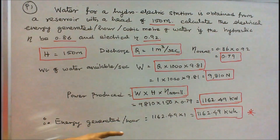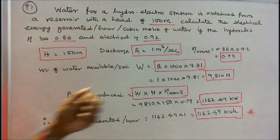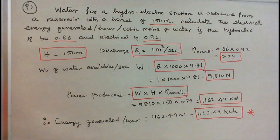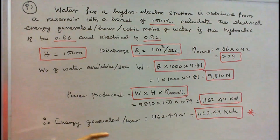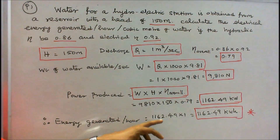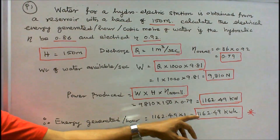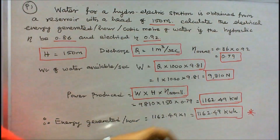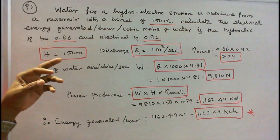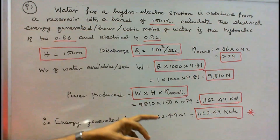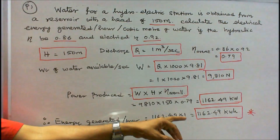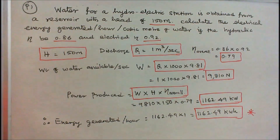Energy generated per hour — this is in watts, we have to convert it into energy by multiplying by time: 1 hour. Therefore, 1162.49 × 1 = 1162.49 kilowatt-hours. So the electrical energy generated per hour per cubic meter of water is equal to 1162.49 kilowatt-hours.